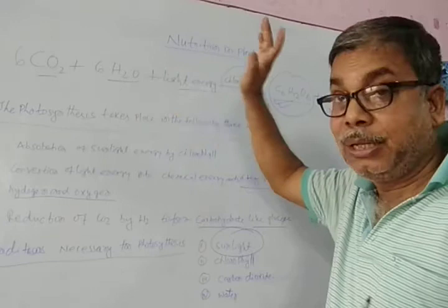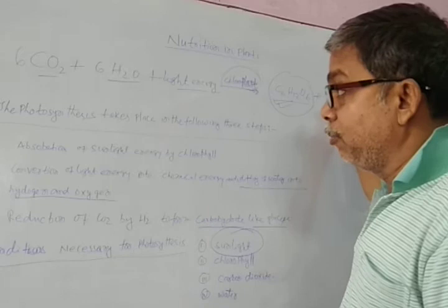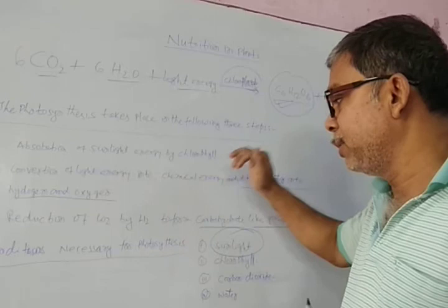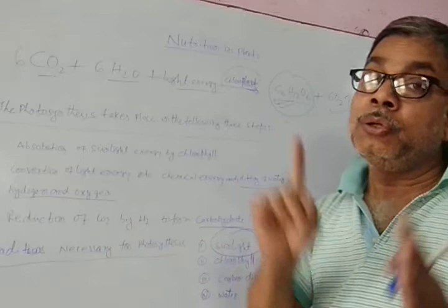Photosynthesis involves: absorption of sunlight, conversion of light energy, and reduction of carbon dioxide. The outputs are carbohydrate formation and oxygen gas release. So we can see these three stages of photosynthesis: absorption of sunlight, conversion of light to chemical energy, and reduction of carbon dioxide.